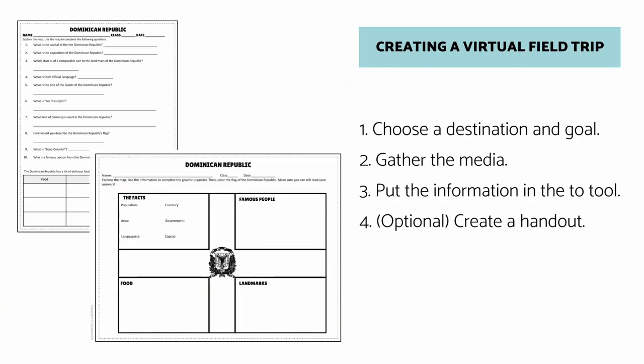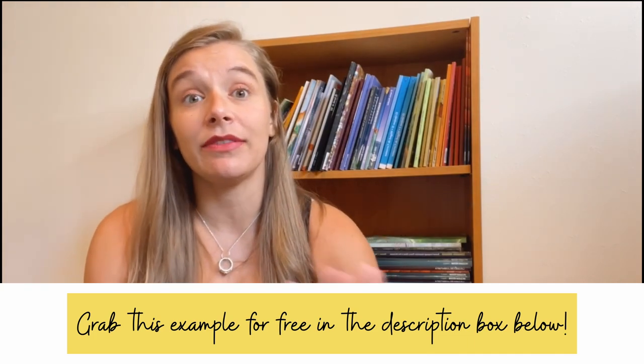Step four is optional but highly recommended: create some sort of handout, graphic organizer, or comprehension questions — some activity where you can check whether students understood what they explored. Some people like to do an activity after they've finished exploring; I like to do something along the way because sometimes students just click through really fast, and sometimes a student will sit with their headphones on watching every single video. A handout can help keep them on track and make sure they're not spending six class periods on one virtual field trip. Whatever you choose, I highly recommend doing something to check students' understanding.